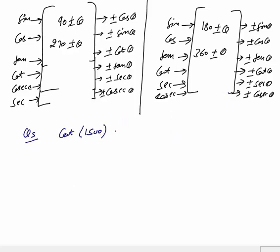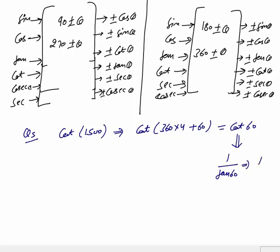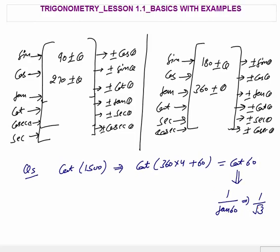Fifth example: cot 1500. We write 1500 as 360 times 4 plus 60 degrees, so this equals cot 60. We don't know cot 60 directly, but cot 60 equals 1 over tan 60, and tan 60 is root 3, so the answer is 1 over root 3. In this way you can easily calculate such questions. That was all about trigonometry lesson 1.1 basics with examples. In the next lesson I will continue with more on trigonometry. Thank you.